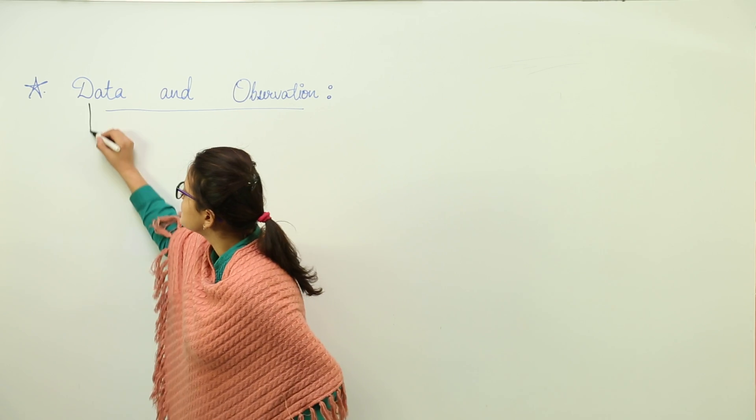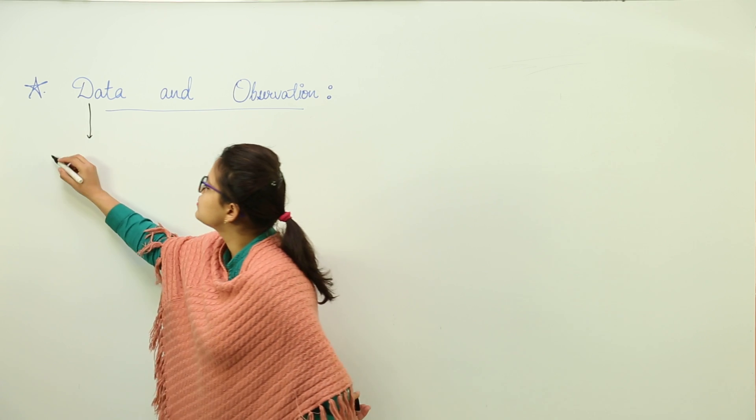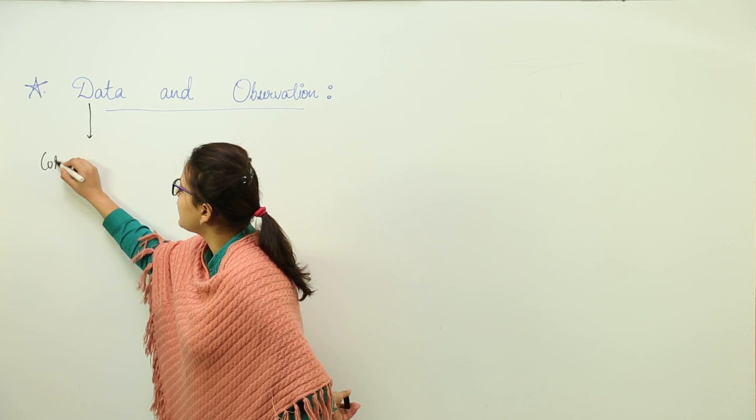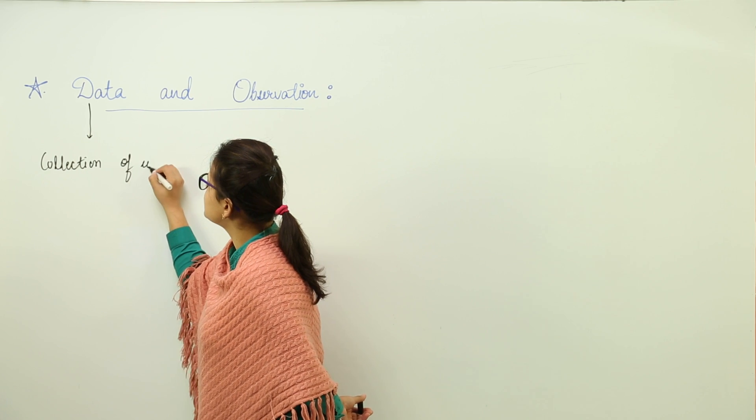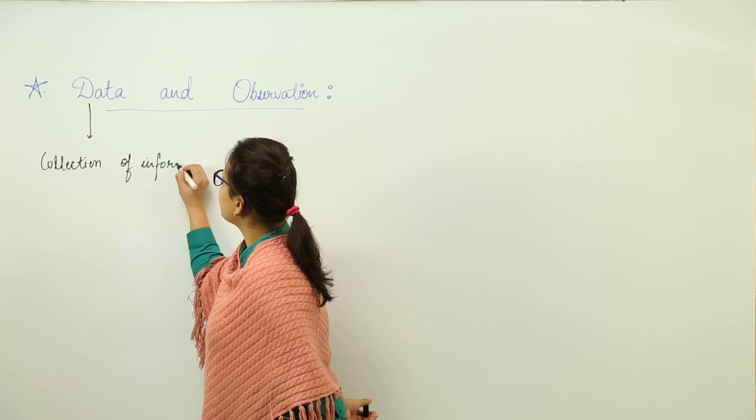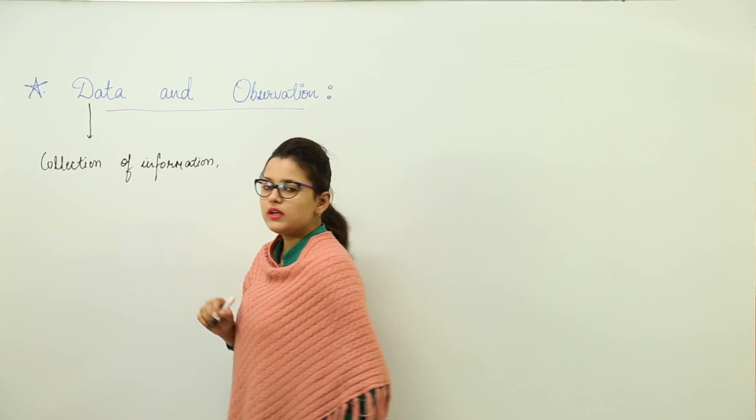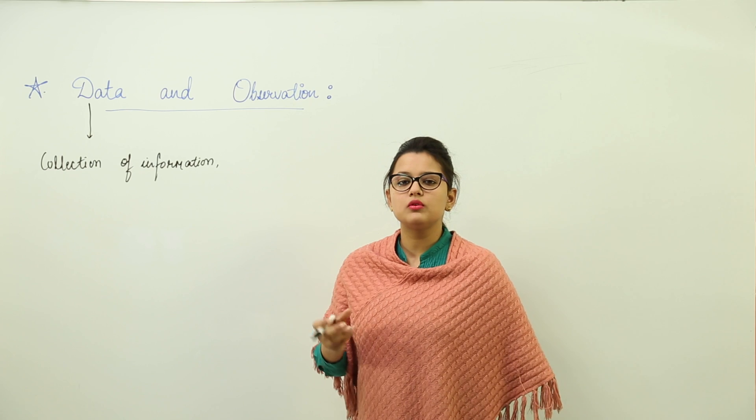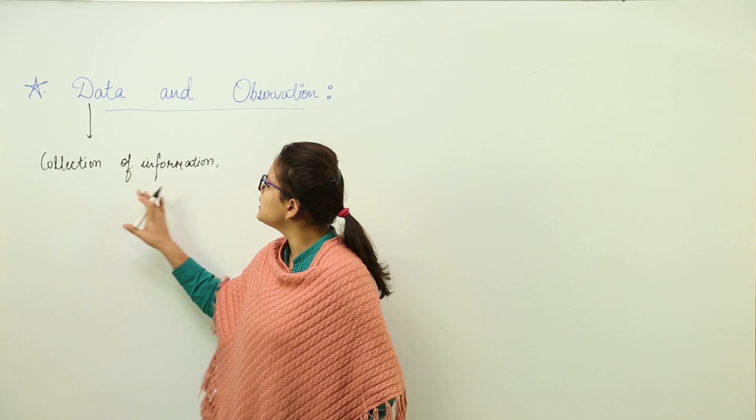See, data is the collection of numerical facts. Data is actually the collection of information or facts. The information could be in any form - it could be theory, it could be some values, or it could be some items. So I am writing data as collection of information or numerical facts.